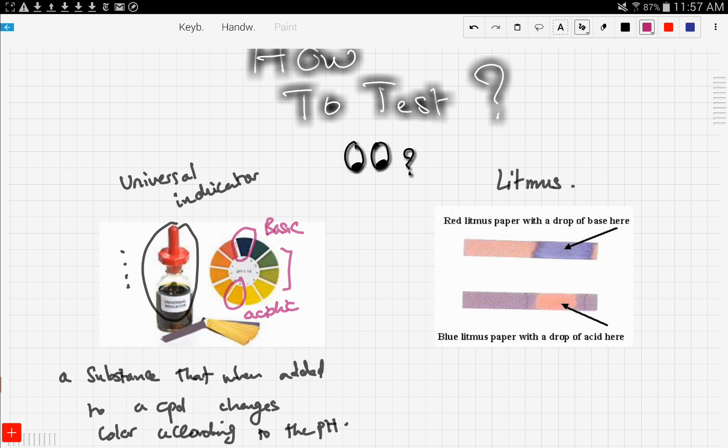Now let's talk about litmus paper, and litmus paper is also an indicator for acidity and basicity. Now we have two types of litmus paper. We have the red one right here, so this is the red litmus paper, and this is the blue litmus paper.